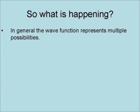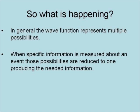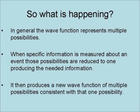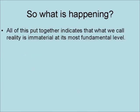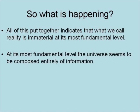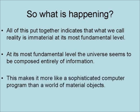So what is really happening? In general, the wave function represents multiple possibilities. When specific information is measured about an event, those possibilities are reduced to one, producing the needed information, and then a new wave function of multiple possibilities consistent with that one possibility is generated. All of this indicates that what we call reality is immaterial at its most fundamental level — the universe seems to be composed entirely of information, making it more like a sophisticated computer program than a world of material objects.